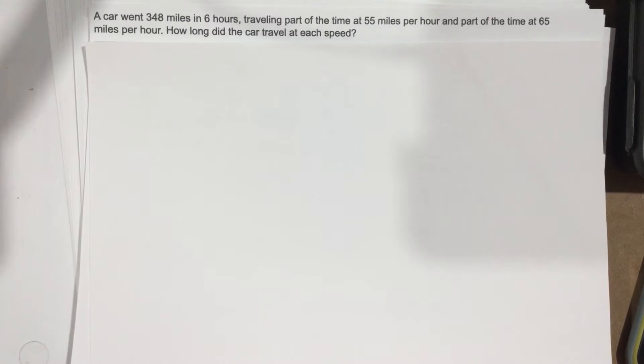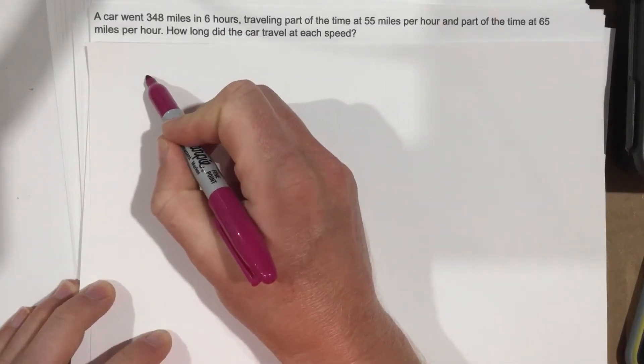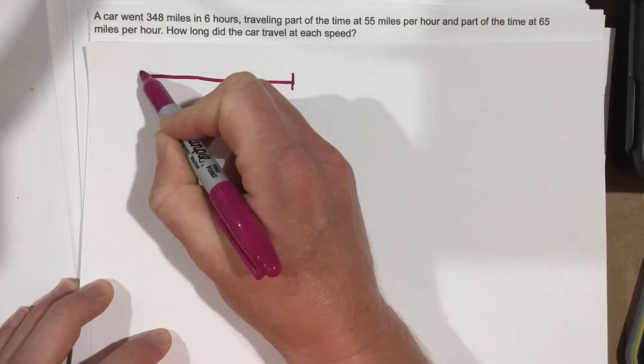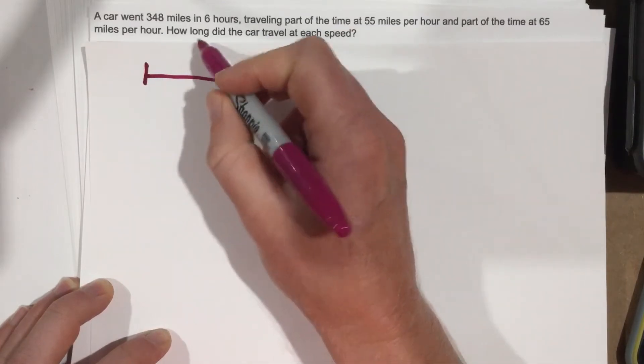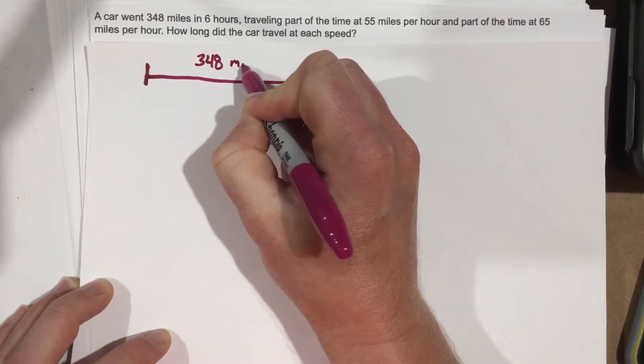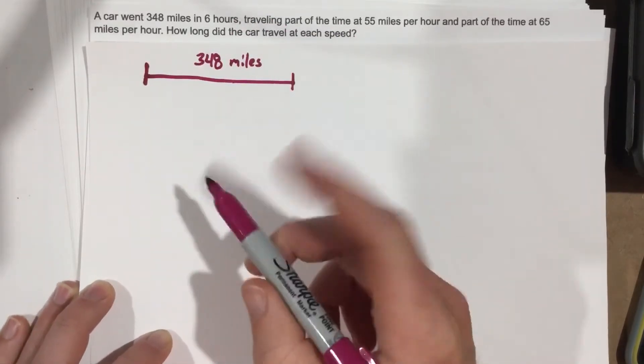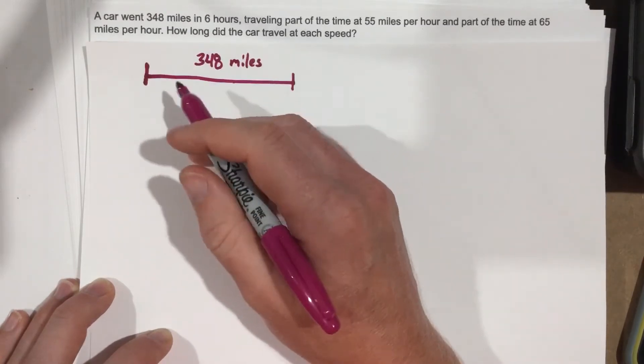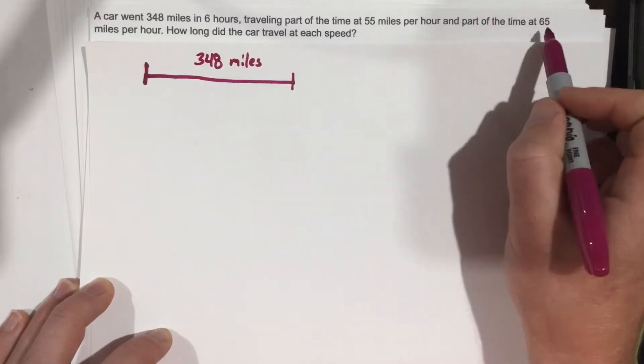So we know the car traveled, let's just make a timeline here. The car traveled from point A to point B. This distance here was 348 miles. Now, we know part of that time, and we don't know which one was longer, but part of that time, they went 55 miles per hour and the car also went 65 miles per hour.